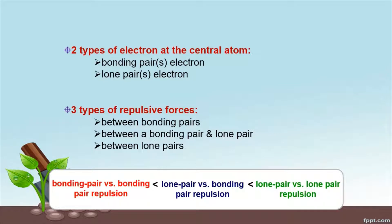There are two types of electrons at the central atom: bonding pairs of electrons and lone pairs of electrons. There are three types of repulsive forces. The weakest is bonding pair versus bonding pair repulsion. Lone pair versus bonding pair repulsion is stronger, and the strongest is lone pair versus lone pair repulsion.